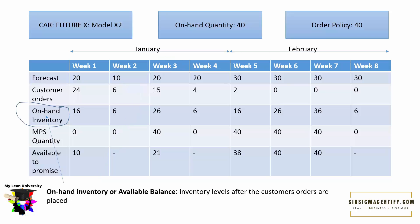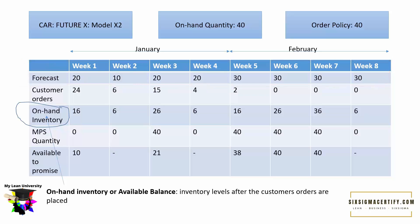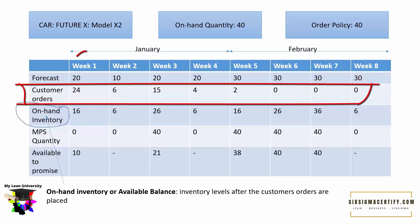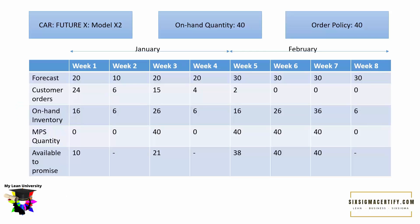On-hand inventory or available balance refers to inventory levels after customer orders are placed. Forecast means the forecasted demand provided by the marketing team for products to be manufactured. Customer orders are the actual orders received. For week one, the actual customer order is 24, whereas the forecast was 20. For week two, suppose there was a nationwide holiday — we forecasted 10 items but have only received 6 so far, since we are still in week one and more orders may come.